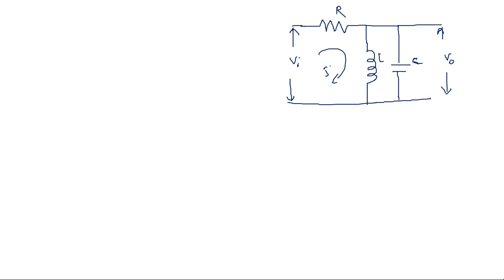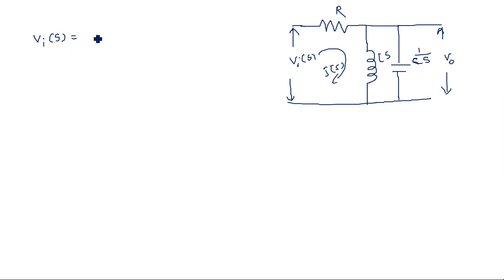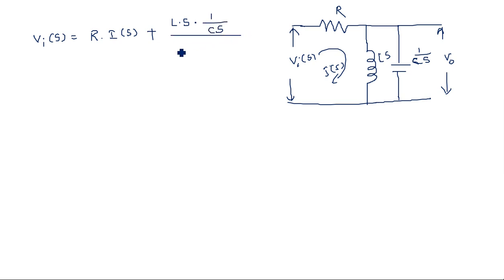Now let us try to calculate the roots of this circuit. I have converted the circuit into the Laplace transform domain and applied the loop equation. So we have V_i of s, Ls, and 1 over Cs. The current is I of s. Applying the KVL equation: V_i of s equals the current through the resistance, which is I of s, so R times I of s, plus the parallel combination of L and C.